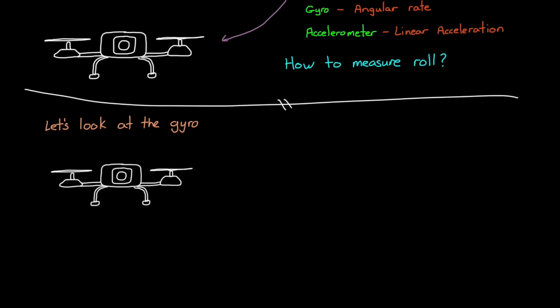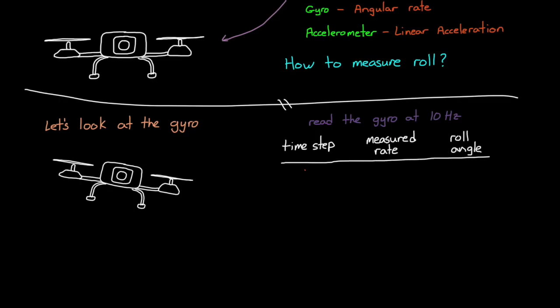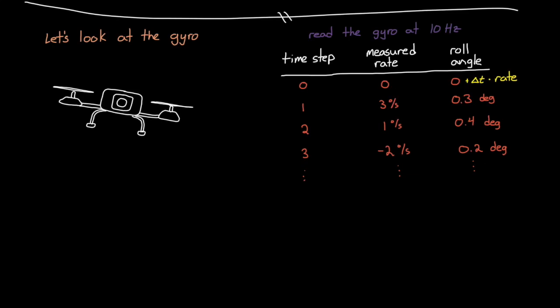That is, we can determine how far the drone has rotated in one time step, and then add that value to the current estimate of roll angle. For example, if we read the gyro ten times a second, and at the first time step the roll rate measures three degrees per second, then after that time step, or 0.1 seconds later, we can estimate that the drone has rotated 0.3 degrees. We can then add that delta angle to the current roll estimate. Then at the next time step we do it again, and then again, and again. Basically we are integrating the angular rate to get angles.